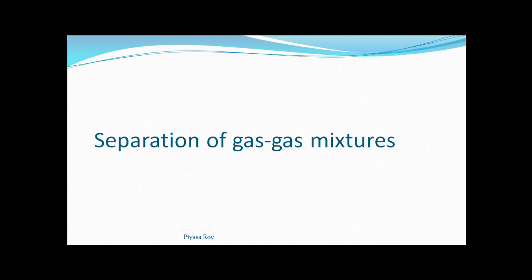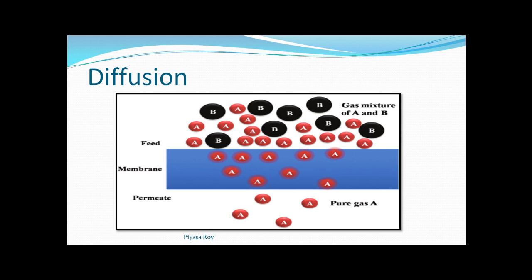Next, separation of gas-gas mixture — diffusion. Diffusion is the spreading out or intermixing of different particles. Generally for gaseous particles, we will see this diffusion process. For liquids also, diffusion will be there, but for gaseous substances, diffusion can be seen very properly.